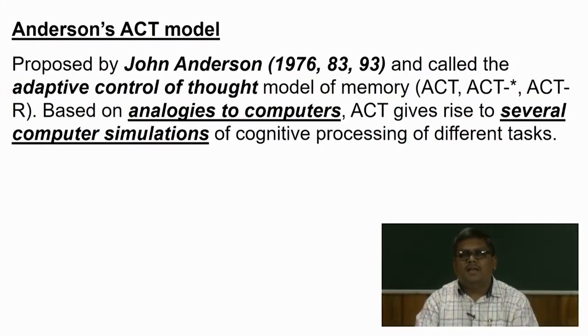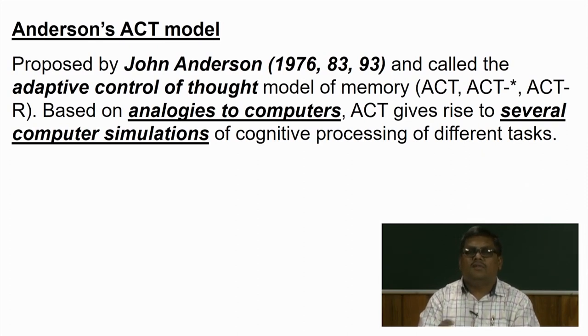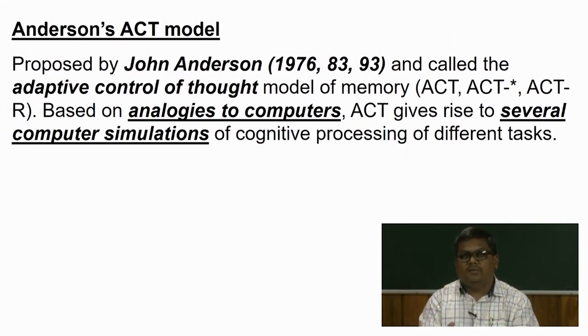Another interesting model proposed for semantic memory is Anderson's ACT or ACTR model — the Adaptive Control of Thought model — proposed by John Anderson in 1976. Those who do computational modeling will be familiar with the ACTR structure. It is a process-orientation model, essentially a box-and-pointer model. It gives rise to several computer simulations of cognitive processing in different tasks.